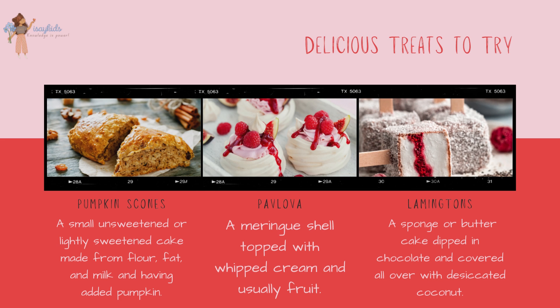Australian foods include pumpkin scones — a small unsweetened or lightly sweetened cake made from flour, fat and milk with added pumpkin — Pavlova, a meringue shell topped with whipped cream and usually fruit, and Lamingtons, a sponge or butter cake dipped in chocolate and covered all over with desiccated coconut. Isn't your mouth watering? Well, mine is!